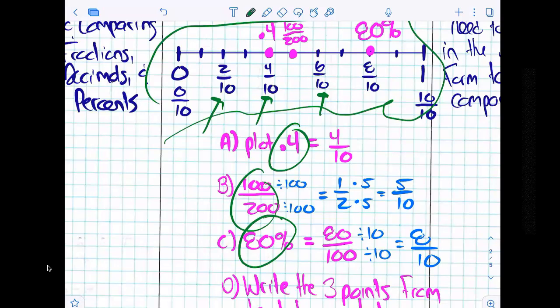So can I put four tenths on that number line before converting it to a fraction? No, I need to convert it to a fraction. So we know that we can convert four tenths to a fraction by just reading it, right?